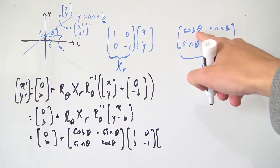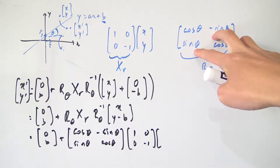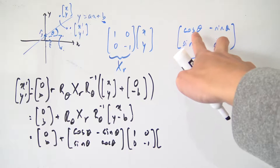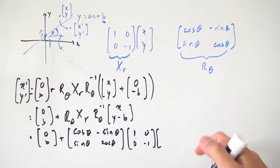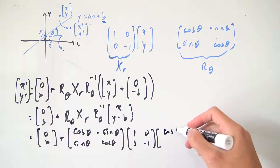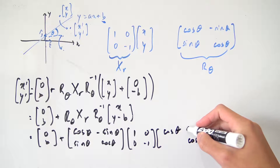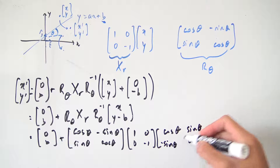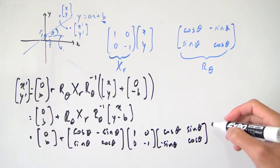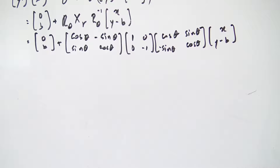We need to calculate the inverse of R(θ). Computing the determinant: ad minus bc is cosine squared minus (minus sine squared), which is cosine squared plus sine squared equals 1. So the determinant is 1 and we don't need to worry about it. All we need to do is switch the two cosines — which stay in place — and negate the off-diagonal entries. So negative sine theta becomes sine theta, and sine theta becomes negative sine theta. That is R(θ)-inverse. And we still have the vector (x, y - b).